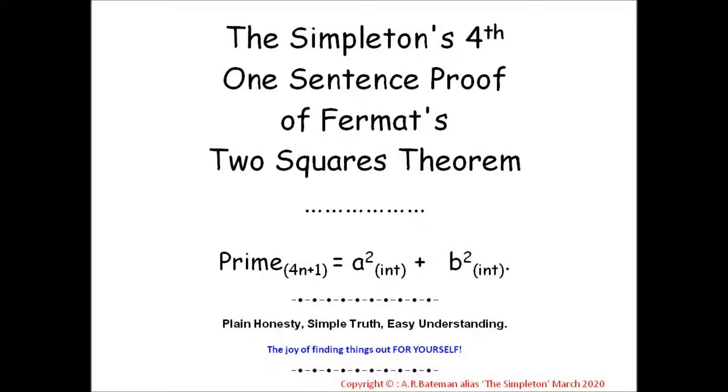The simpleton's fourth one-sentence proof of Fermat's two-squares theorem, which states that every prime of the form 4n plus 1 can be written as the sum of two integers squared. My motto: plain honesty, simple truth, easy understanding, the joy of finding things out for yourself.